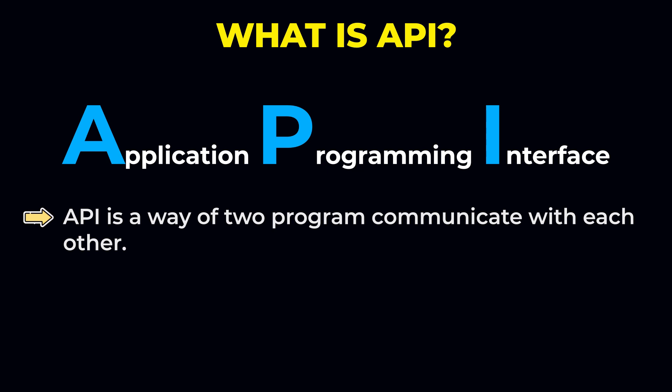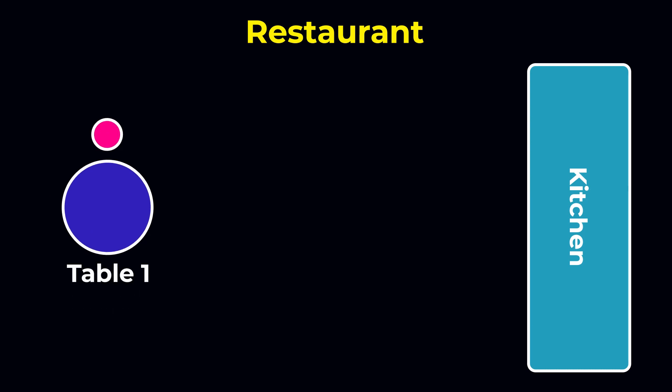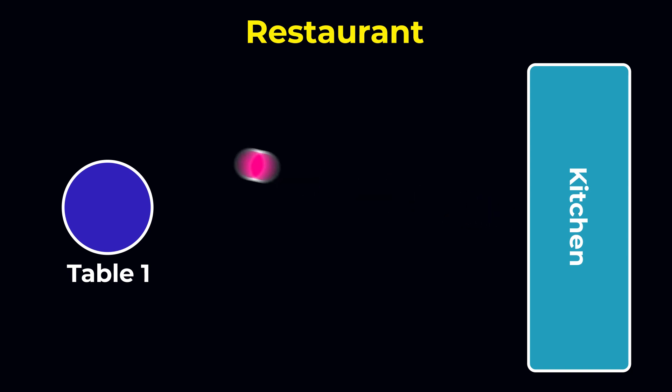Let's understand this with an example. Here is a restaurant — imagine we are sitting at table 1 and we want to order some food. In this case, we cannot directly go to the kitchen and order our food to the chef. Instead, we will call the waiter.